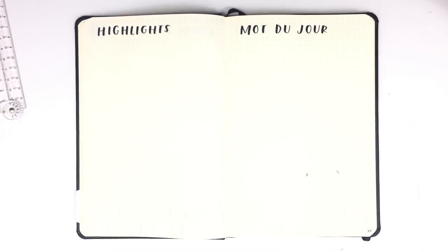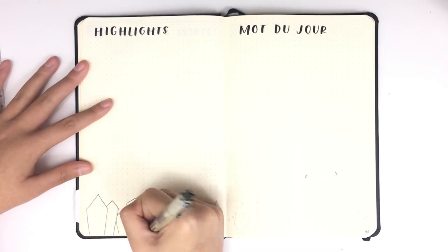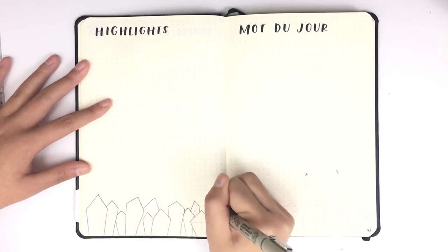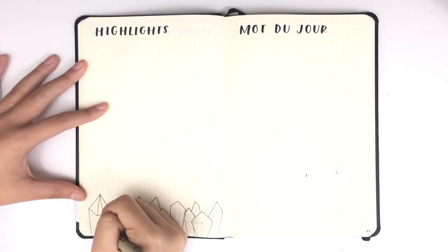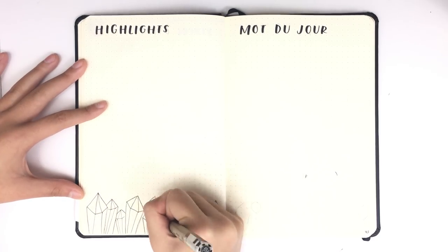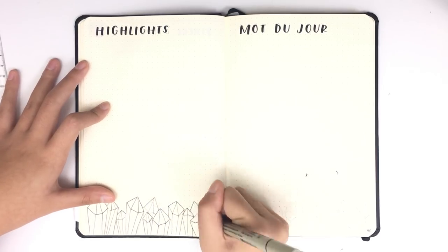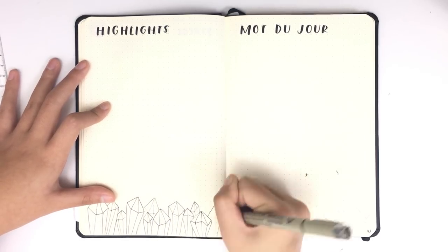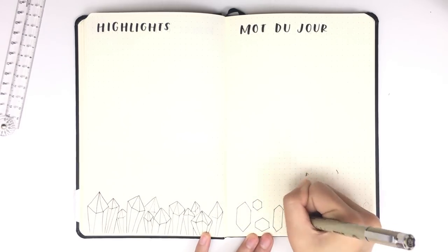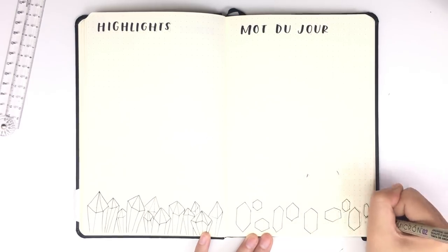Now I'm moving on to the next two-page spread which includes highlights. This is another thing I did last month — a kind of gratitude journal slash reflecting on the day, just writing down the highlight of the day. Another thing I'm trying out this month is word of the day in French, because I take French in school and I'd really like to improve my vocabulary and my French skills in general, so I'll be learning a new word every day and recording it here.